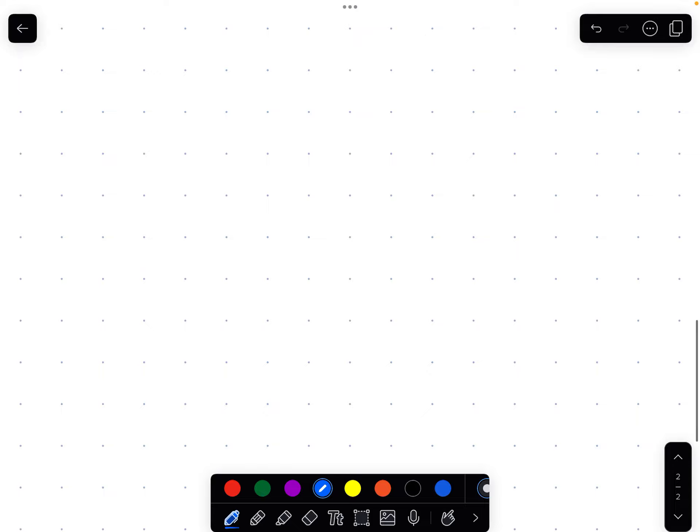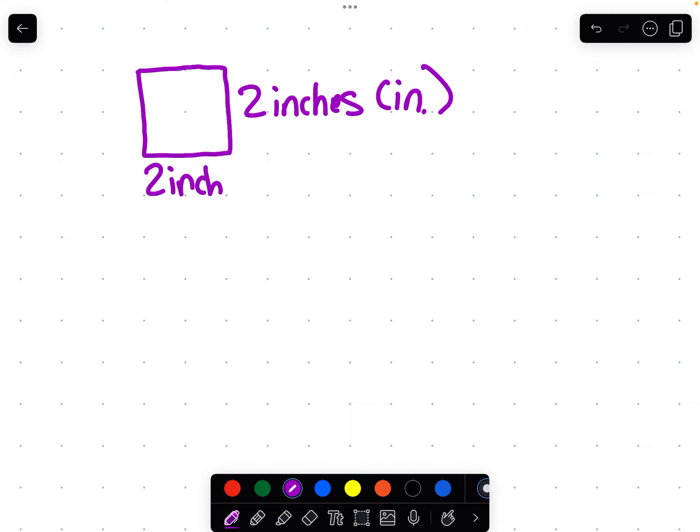And this also applies for squares. So let's draw a square. Let's pretend this is 2 inches. And the abbreviation for inches is IN. And then let's pretend that this is also 2 inches on this side. And remember, in a square, all four sides are equal. And the opposite sides are parallel. All the angles are the same. So we've got a square here.